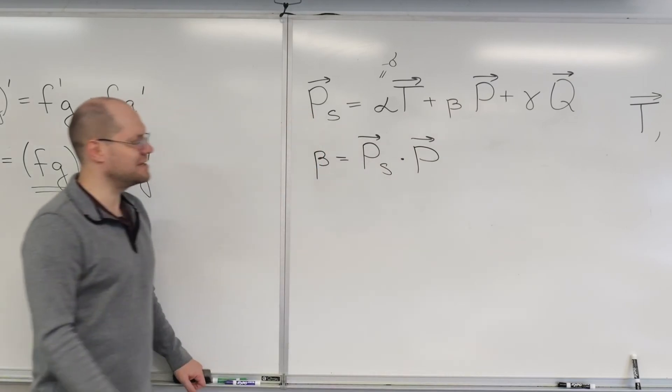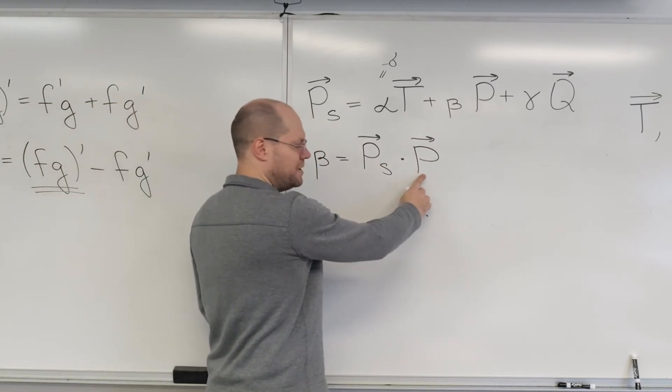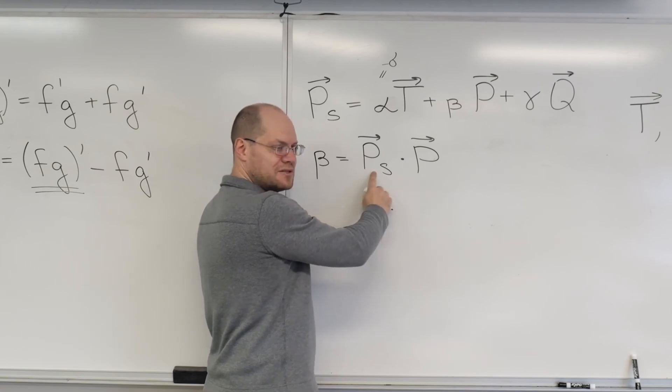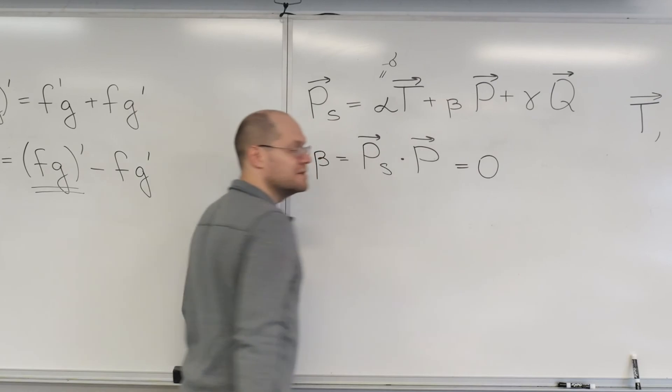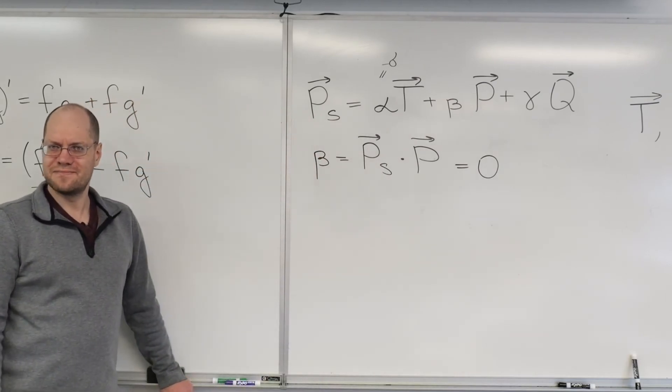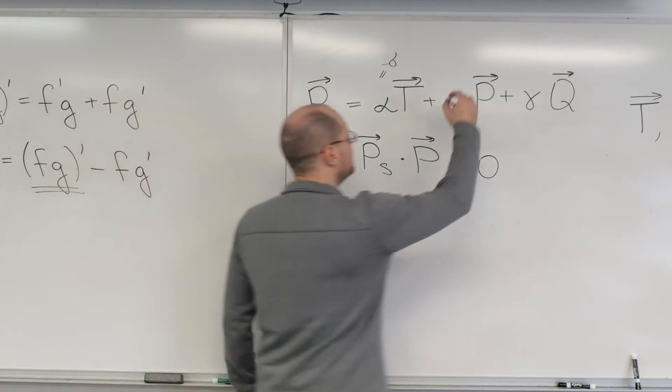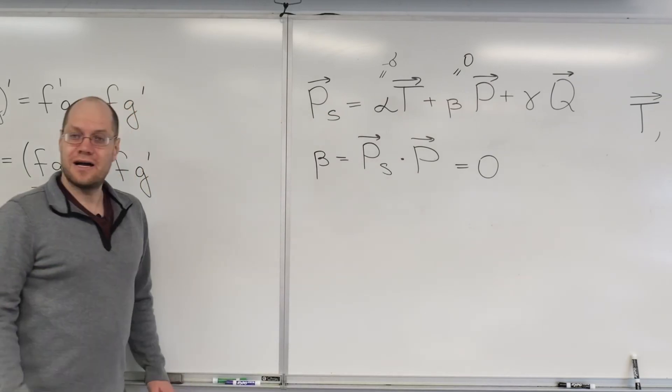okay, by our decomposition by the dot product. But because P is constant length, its derivative is orthogonal to it. So this equals zero. So that's all there is to it. Okay, so beta equals zero. And so now we come to gamma.